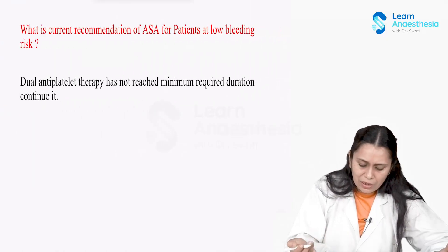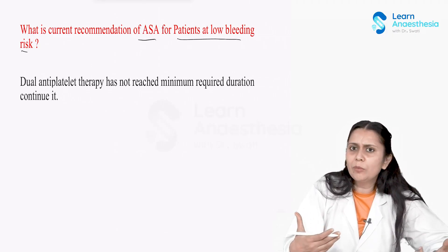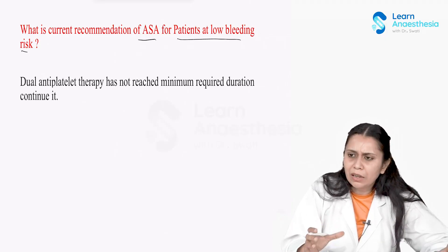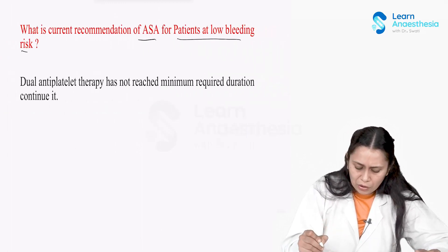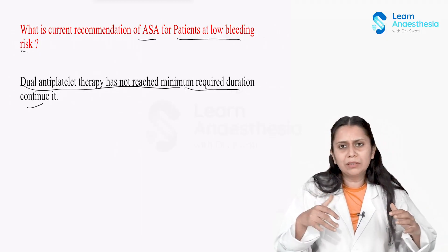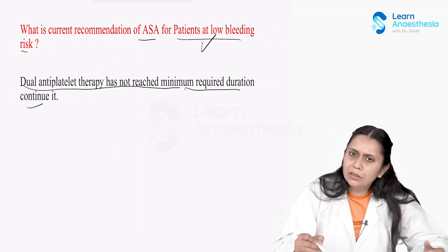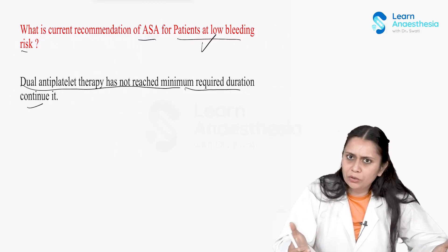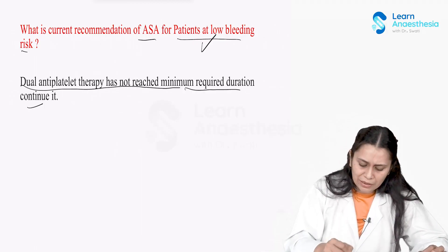What is the current ASA recommendation for a patient with low bleeding risk? If a patient is on dual antiplatelet therapy — that is, on clopidogrel — and the dual antiplatelet therapy has not reached its minimum required duration after stenting, we need to continue it. If the patient is undergoing low risk surgery, dual antiplatelet therapy can be continued, including clopidogrel. This is the current ASA recommendation.